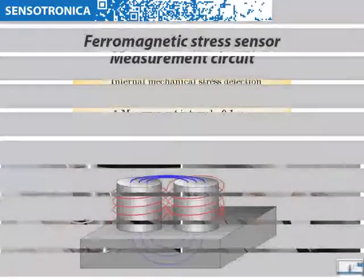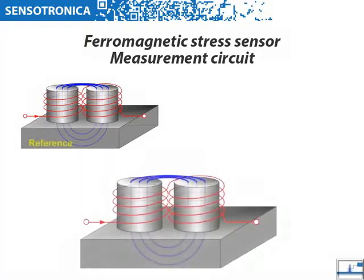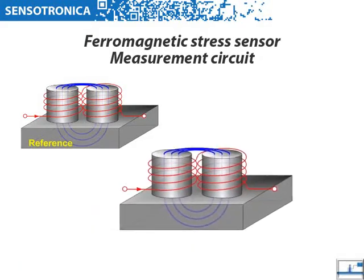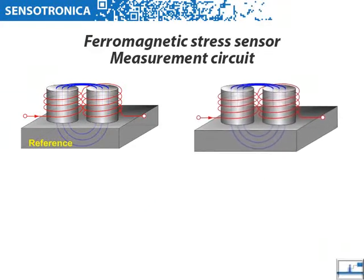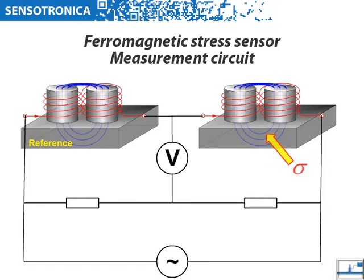The developed measurement system presupposes two identical transducers: operating and compensating. Transducers are fixed on the surface under test by contact sealing. The compensating transducer is placed on an unloaded metal sample made of the same material as the construction under test. The value difference is transmitted to the main unit, processed, and sent to the operator.